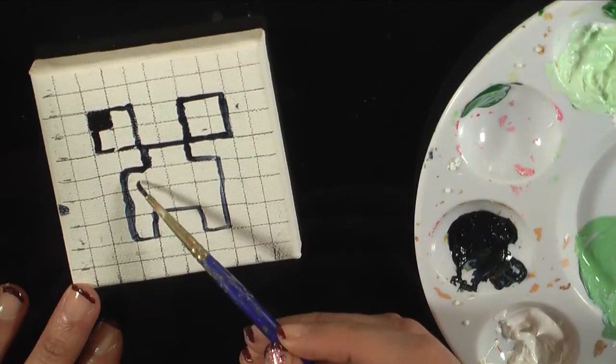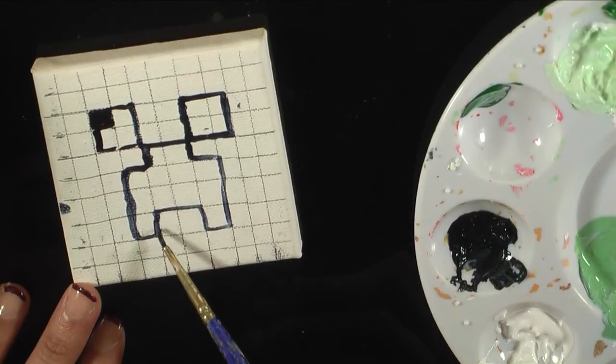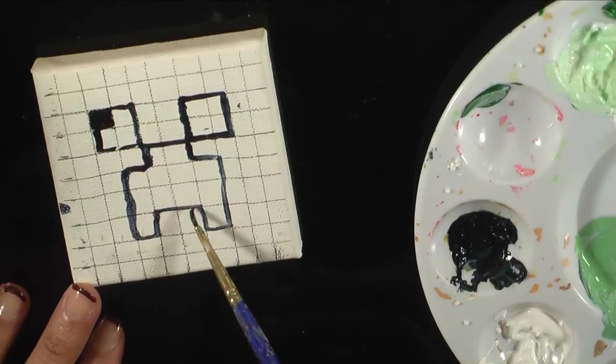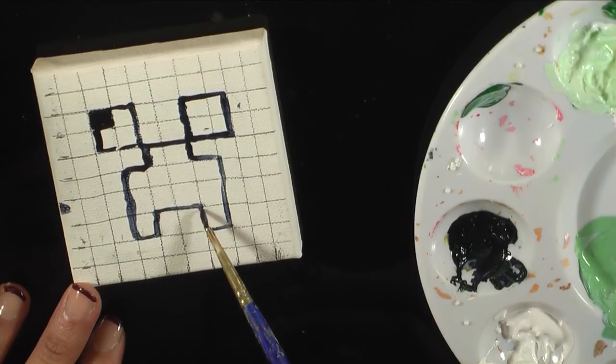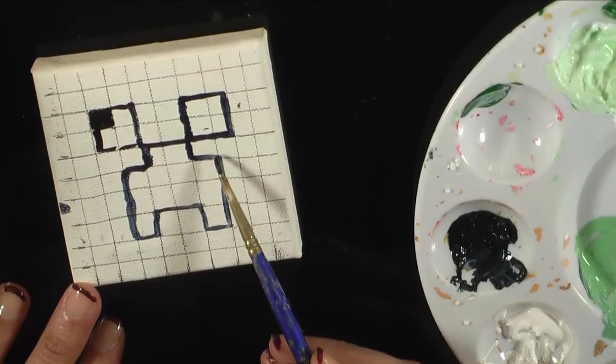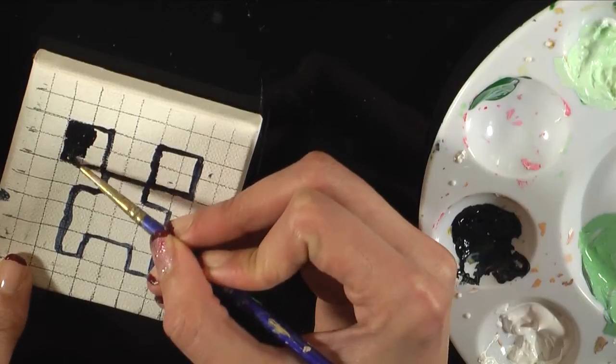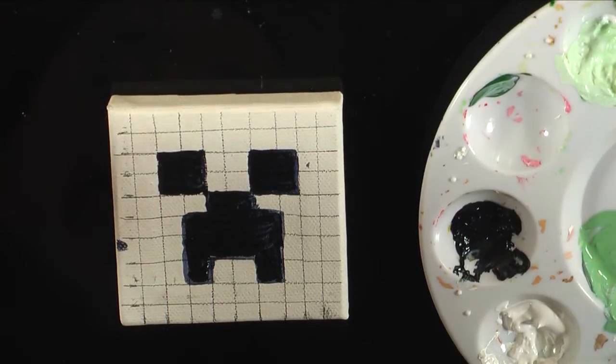So the mouth goes 1, 2, 3, takes up 3 blocks and then you go over 1 and then up and then 2 blocks over, 1 block down, over and then up 3, then over 1, then back up. Now we're going to fill this in.